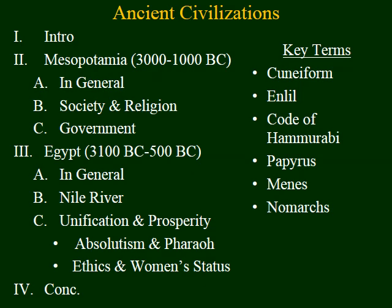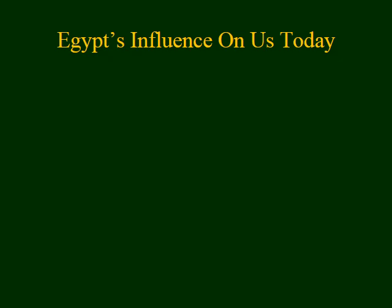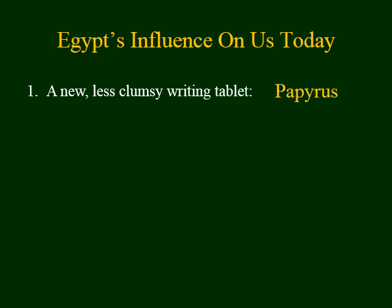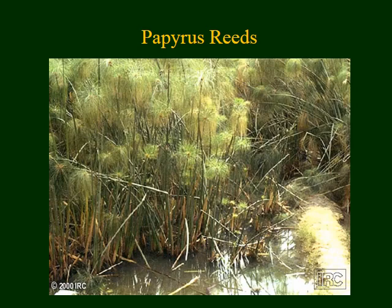I'd like to switch gears now and talk about ancient Egypt. Egyptian society is quite old; however, they have a major influence on us. One of the things they provided was a new and more efficient writing tablet. Instead of having to use clay, they invented papyrus. The word 'paper' comes from the word papyrus, and papyrus was a plant — just as our paper today comes from wood, papyrus came from this plant.